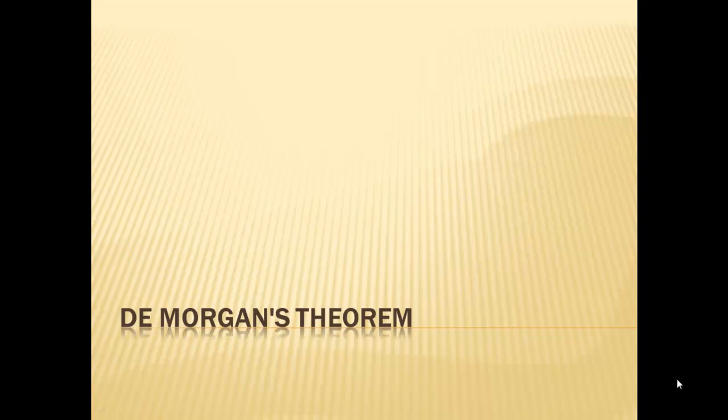This is the next part of the simplification lecture where we're going to talk about De Morgan's theorem. In the last section we talked about simplifying equations when they only had single lines over single variables like A-not, B-not, or C-not. We didn't have lines over multiple variables, so in this section we'll see how De Morgan's theorem works with lines over multiple variables.